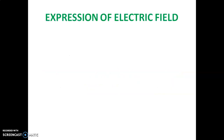From this statement we can get the expression of electric field. Electric field E is equal to limit Q tends to 0 of F by Q. This limit Q tends to 0 means the value of Q is very, very small — it approaches 0 but will not become 0, because if it becomes 0 it has no meaning at all.